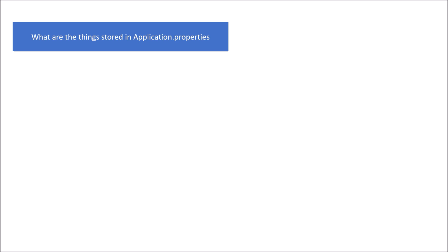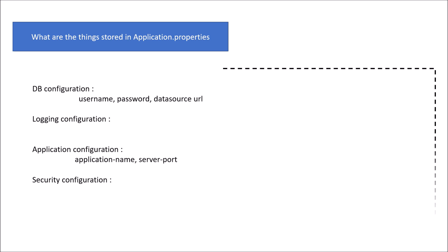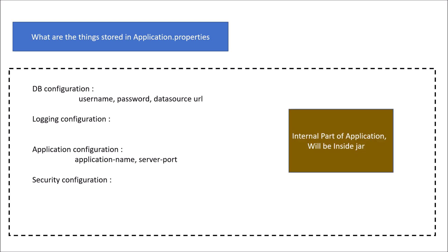If I ask you what things are stored in application.properties, the very common answers would be database configuration like username, password, datasource URL, logging configuration, application configuration like application name and server port, and security configuration. All these configurations are stored in application.properties, and when you build the jar, this file becomes part of it — so all these configurations will be part of the jar.